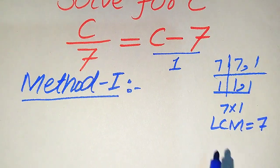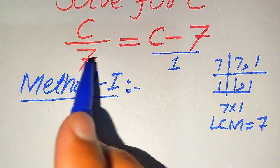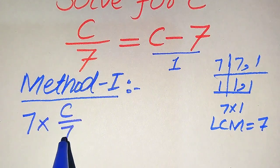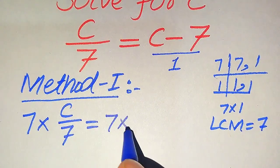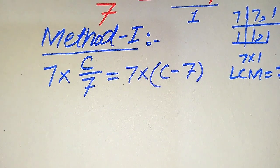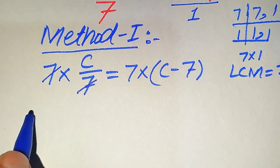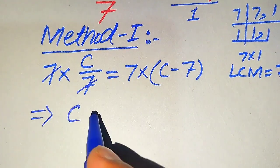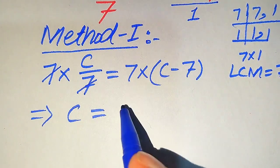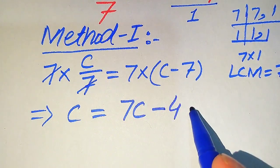We multiply the LCM on both sides. It is written as 7 multiplied by C divided by 7 equals 7 multiplied by (C minus 7). In the next step, the 7 cancels out on the left side and we get C equals 7C minus 49.